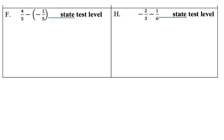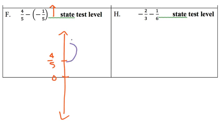Most of the state test integer problems involve fractions or decimals, so you really need to be comfortable with this. But it's the same idea as the first page. Here we have 4 fifths minus negative 1 fifth. Since we're subtracting a negative amount, this is like subtracting weight, which means that even though that's subtraction, this is actually going to go up. So we need to start above 0 at 4 fifths, and then go up 1 fifth. And 4 fifths plus 1 fifth equals 5 fifths, which is equivalent to 1 whole.